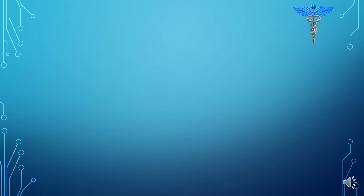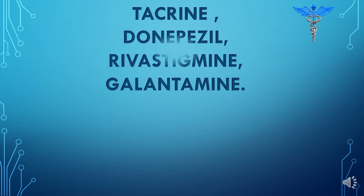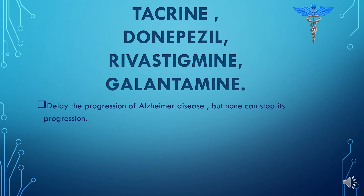We have tacrine, donepezil, rivastigmine, and galantamine — all reversible anticholinesterase agents. They all play a role in delaying the progression of Alzheimer's disease, but none can stop its progression.